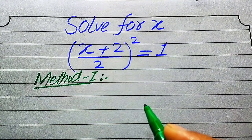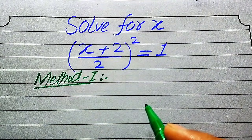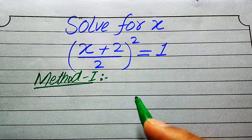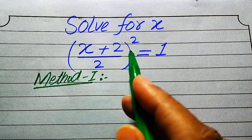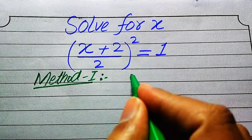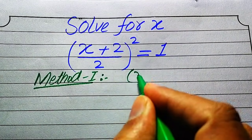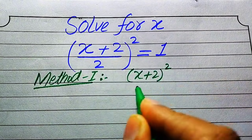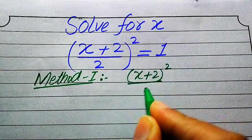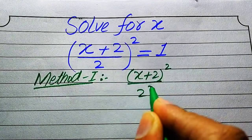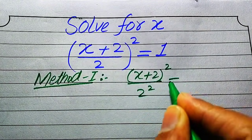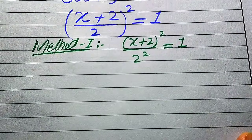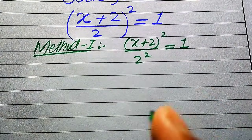Now we move towards our first method. In the first method, we need to break the square sign separately on both values, and it will be written as (x + 2)² divided by 2² equals 1.